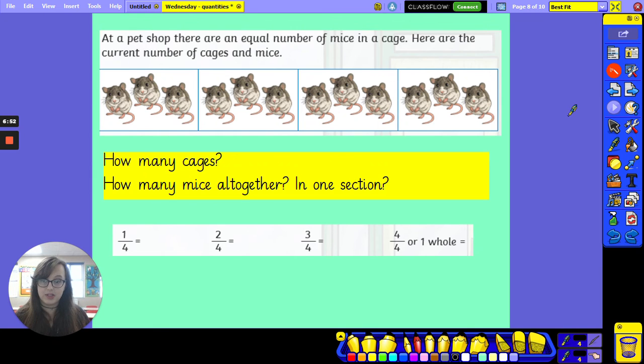The last question I want to look at with you now involves a pet shop and some mice. At a pet shop, there are an equal number of mice in a cage. Here are the current number of cages and mice. You can see here, it looks just like a bar model. We've got four cages. One, two, three, four. And in each cage, we have three mice.